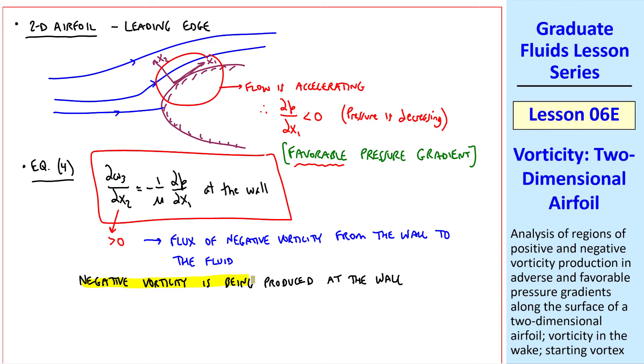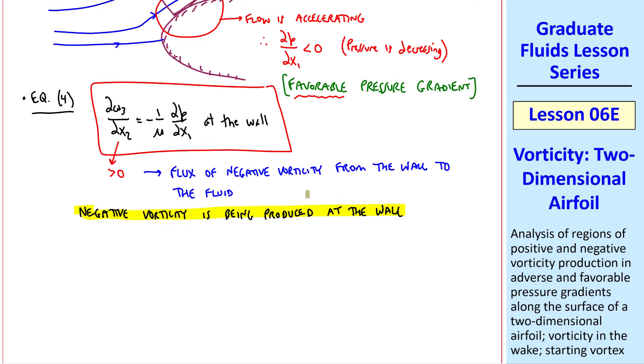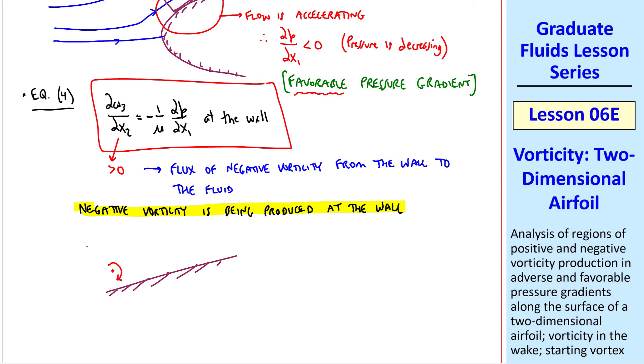The signs can get a little confusing here, but think about the physics. Negative vorticity is mathematically clockwise. So as negative vorticity is being produced, it leads to a clockwise rotation of the fluid particles, and the fluid particles are accelerating in the flow direction.